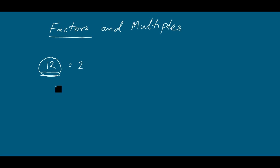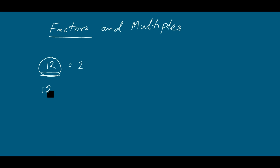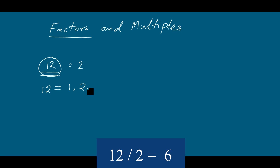Let us find the way of finding factors of 12. We write 12 and start from 1, because 1 is a factor of every number, so 1 is a factor of 12. Now apply the divisibility rule for prime numbers — start from 2 and check whether 2 can divide this number. As there is a 2 in the ones place, it is an even number, so 2 can divide it. Therefore, 2 is also a factor of 12.